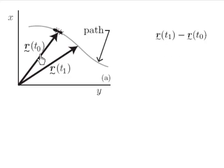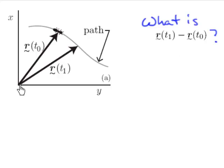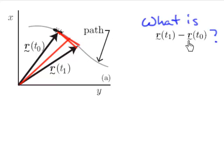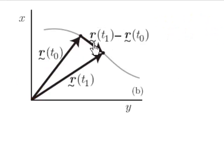Recall in my definition of velocity the numerator contains a term that looks like the difference between two position vectors: r(t1) minus r(t0). The question is: what is that thing? We've got the difference between two vectors — it's going to be another vector. What does that vector look like? Recalling the definition of a difference vector, r(t1) minus r(t0) is the vector that begins at the tip of r(t0) and ends at the tip of r(t1).